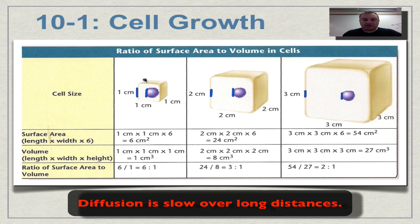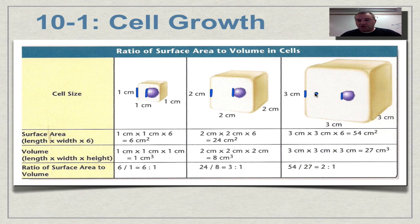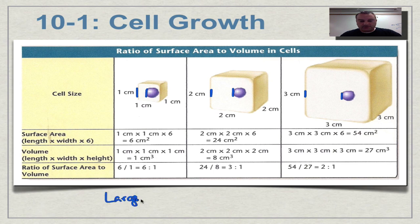Looking back at the diagram, notice the distance from the nucleus to the edge increases as cells get bigger. In the baby cell the nucleus is close to the edge, so oxygen gets in, carbon dioxide gets out, and information from the nucleus reaches nearby ribosomes quickly. In the medium cell there's much more distance, taking longer for materials to diffuse. In the very large cell it's an enormous amount of space, so things from the nucleus take much longer to reach the corners. A small cell is far more efficient.